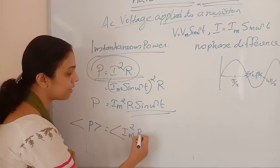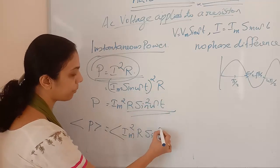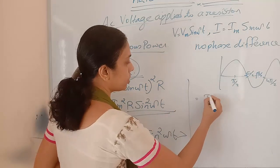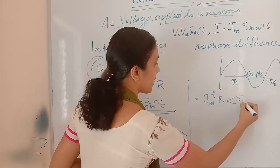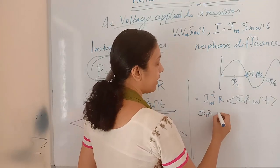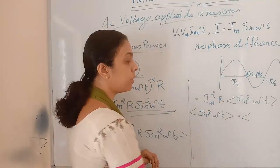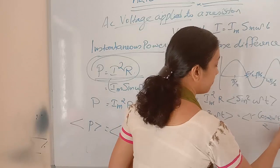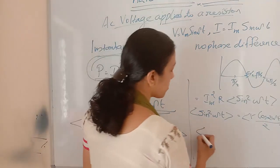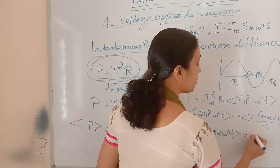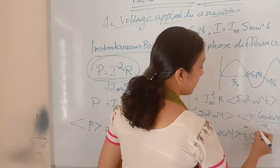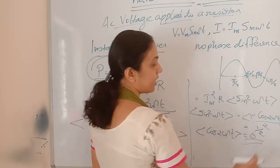The average of sin²(ωt): using trigonometry, sin²(ωt) = (1 − cos 2ωt) / 2. The average of cos 2ωt equals zero, so the average of sin²(ωt) equals 1/2. Therefore the average power P = Im²R / 2.